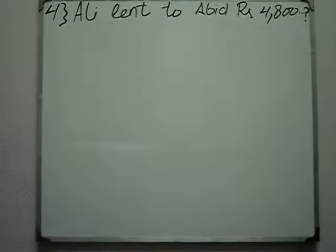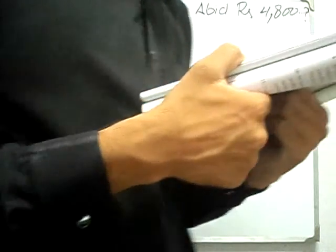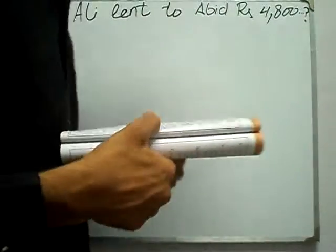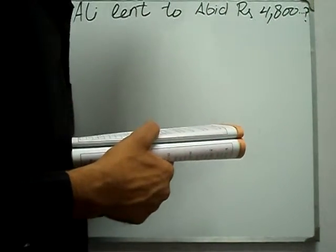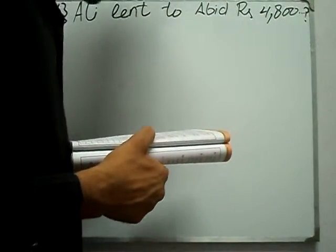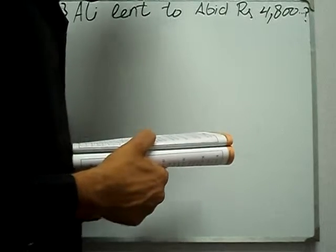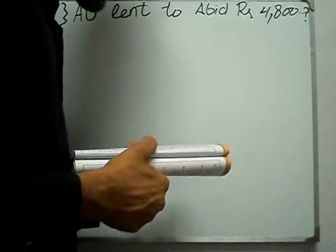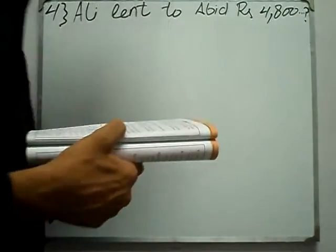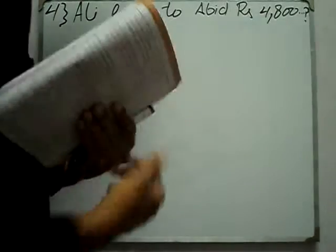Ali lent to Abid RS 4800 for 7 months. At the end of this period, Abid had to pay Ali a profit of RS 119. What was the rate of simple profit per annum?